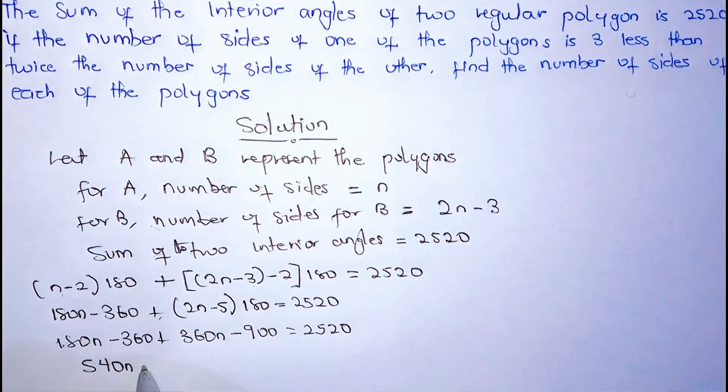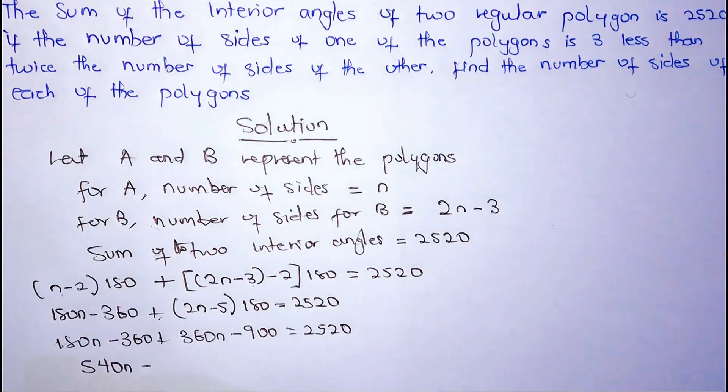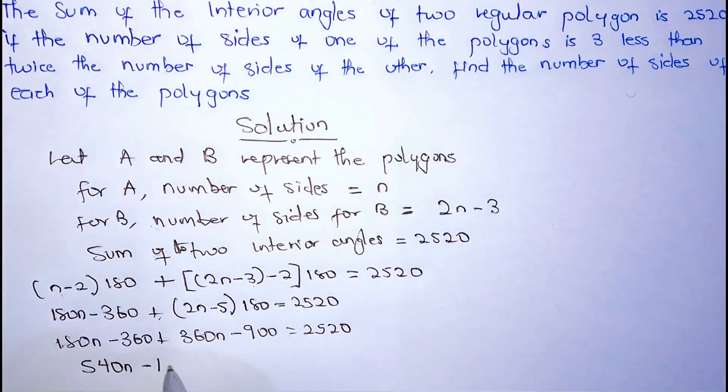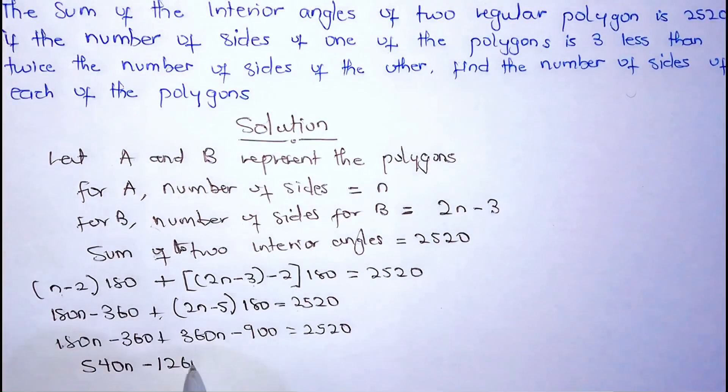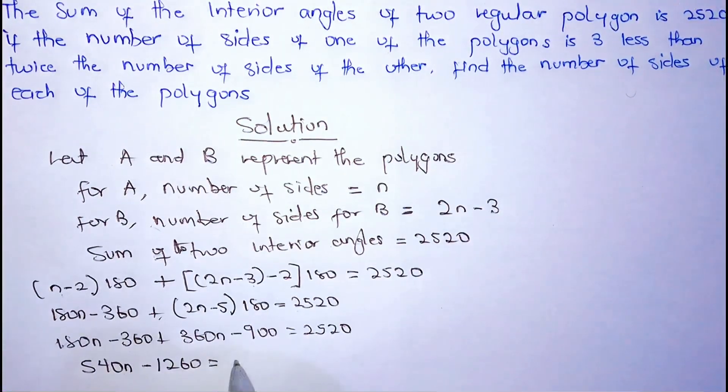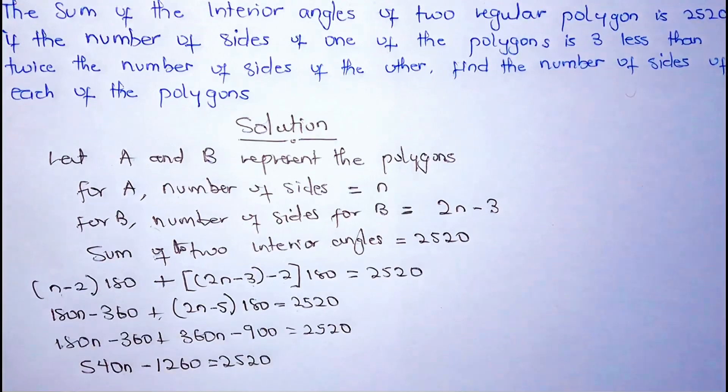So 540N minus, now minus 360 minus 900 here is going to be 1260, and this is equal to 2520.